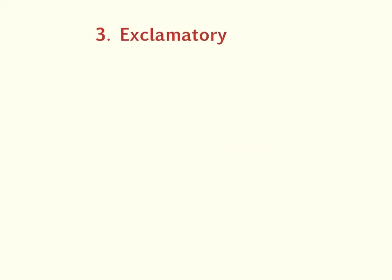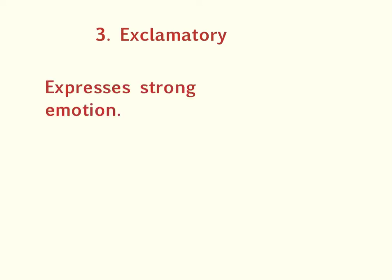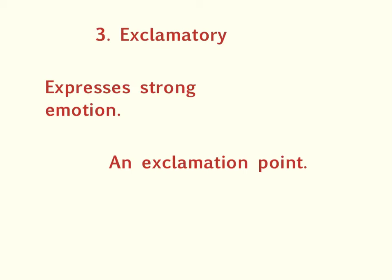Another type of sentence is an exclamatory sentence. Try to figure out what an exclamatory sentence does. If you answered that an exclamatory sentence expresses strong emotion, then you got this one right too. Excellent. Now, what punctuation do we use to end an exclamatory sentence? If you answered that an exclamatory sentence ends with an exclamation point, then you're correct. So far, so good.